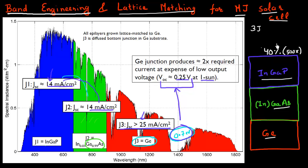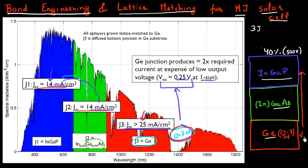Looking deeper into it, we found that this efficiency was limited by essentially the bottom cell, which had a band gap less than what was desired. It had a band gap of 0.7 electron volt, which resulted in a high short circuit current for this junction. But that was not really useful because the overall current of the cell, which is constant throughout the three junctions, was limited by the top and middle junction, which had a much lower current. Also, since this cell had a lower band gap, it resulted in lower open circuit voltage, reducing the overall open circuit voltage of the cell.